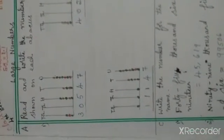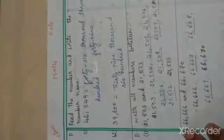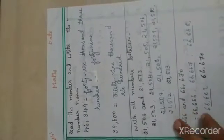Then exercise 1.1: read the numbers. First question, second question, and third question answers. Then the D question: read the number and write the number name — the first two questions are tried, then the remaining are homework. Then write all numbers between the given numbers — between numbers are given: one, two. Then exercise 1.2: read the number and write in words.